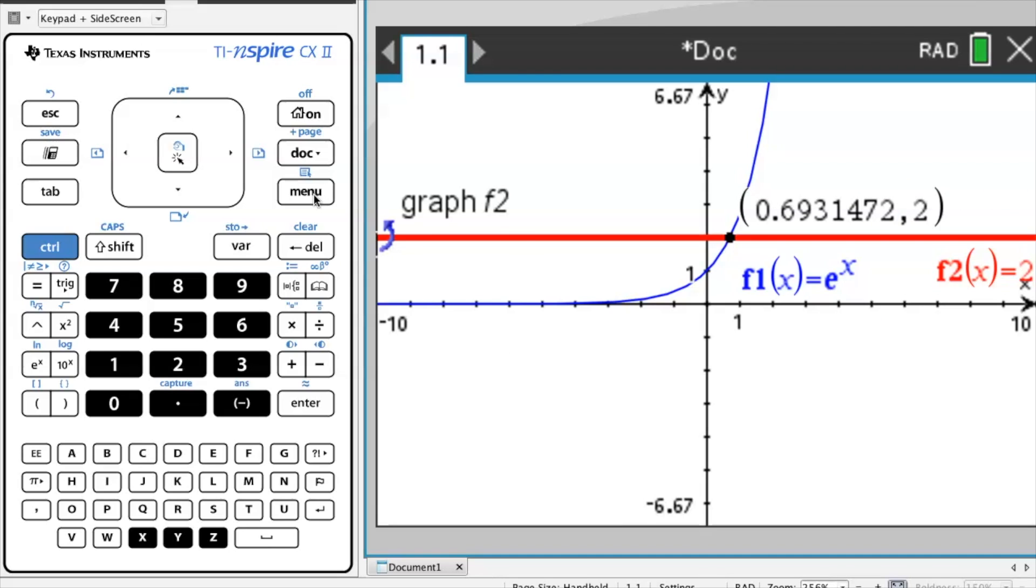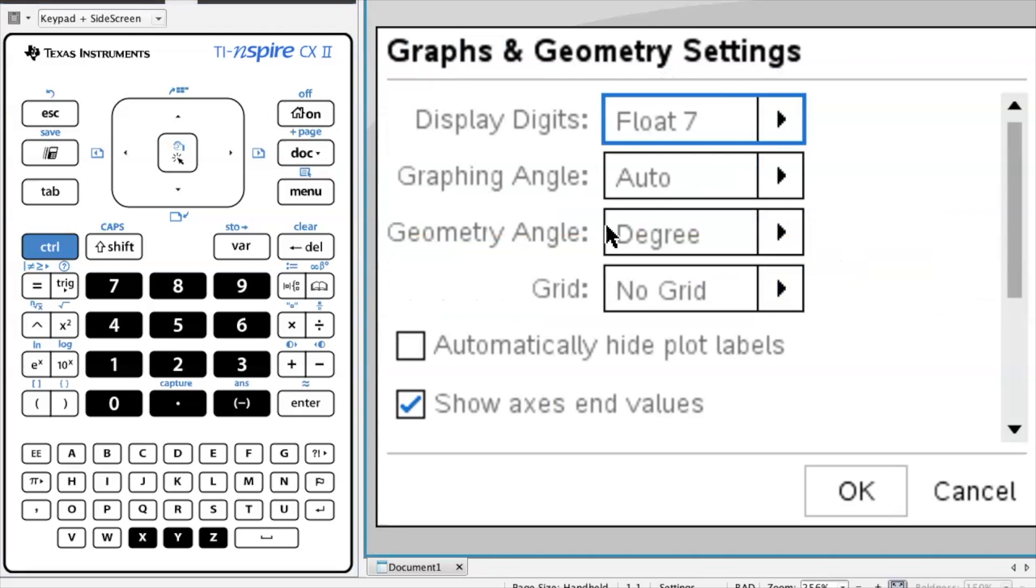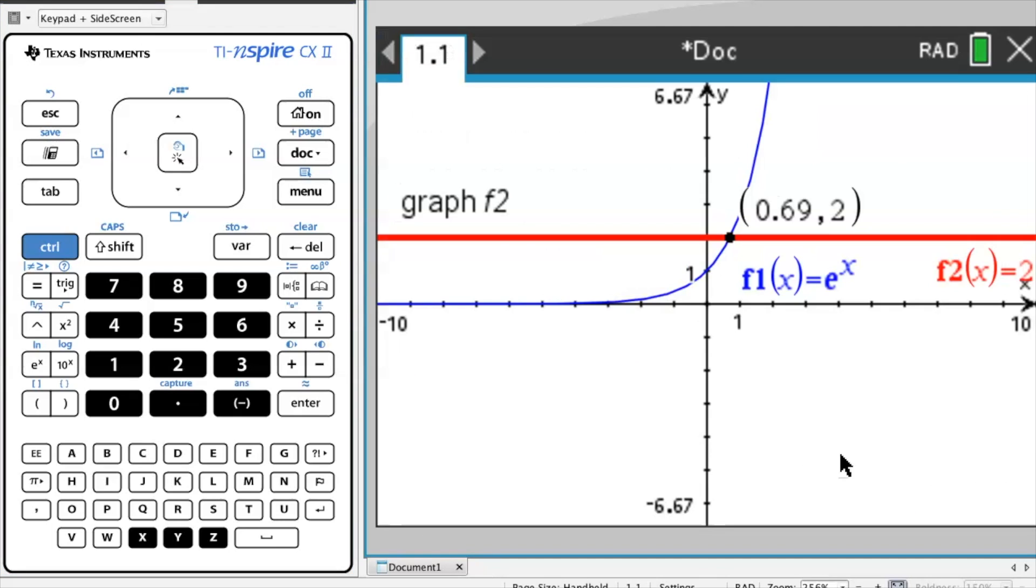If I were to decrease this float count number, then it will go down to that number, say Float 2, and then it will be only 0.69, 2 digits.